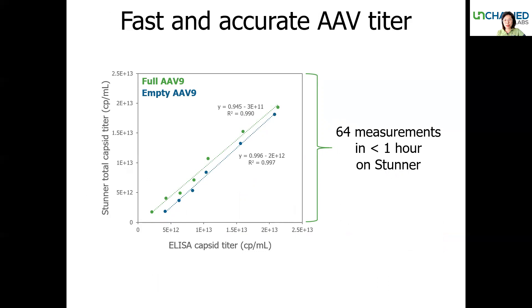Stunner saves you time from running long three-hour ELISAs to get the titer. Here we're making a direct comparison of Stunner titer versus ELISA titer. In the scatter plot, we're showing Stunner capsid titer on the y-axis and the ELISA titer on the x-axis. We measured AAV9 in both full and empty formats — the green dots are the full AAV9 capsids and the blue dots are the empty AAV9 capsids. The ELISA and Stunner results are very comparable, since the slope for both formats is close to one with a very high R-squared. The advantage is that Stunner took only 45 minutes to finish all 64 measurements.